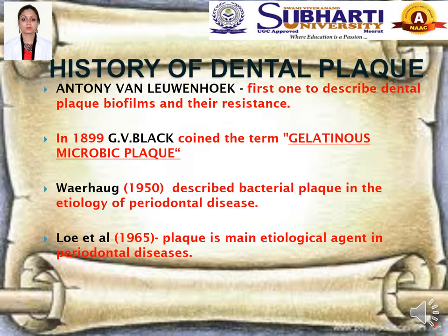Going back to the history of dental plaque: Anthony Van Leeuwenhoek was the first to describe dental plaque biofilms and their resistance. G.V. Black in 1899 coined the term Gelatinous Microbic Plaque. Warehog in 1950 was the first to describe bacterial plaque in the etiology of periodontal disease. And in the year 1965, Lowe et al. stated that plaque is the main etiologic agent behind periodontal diseases.